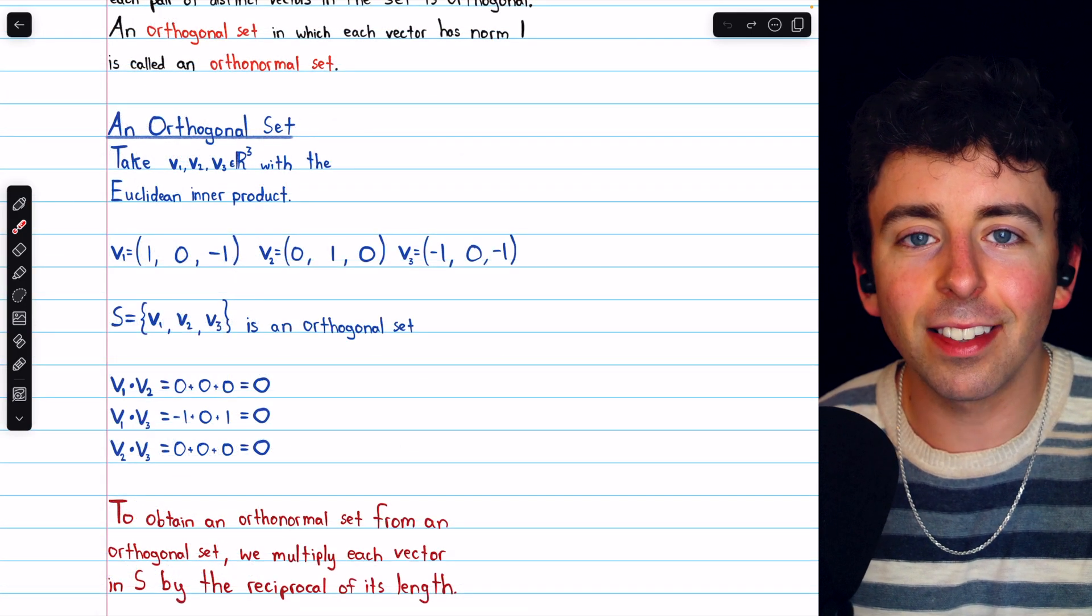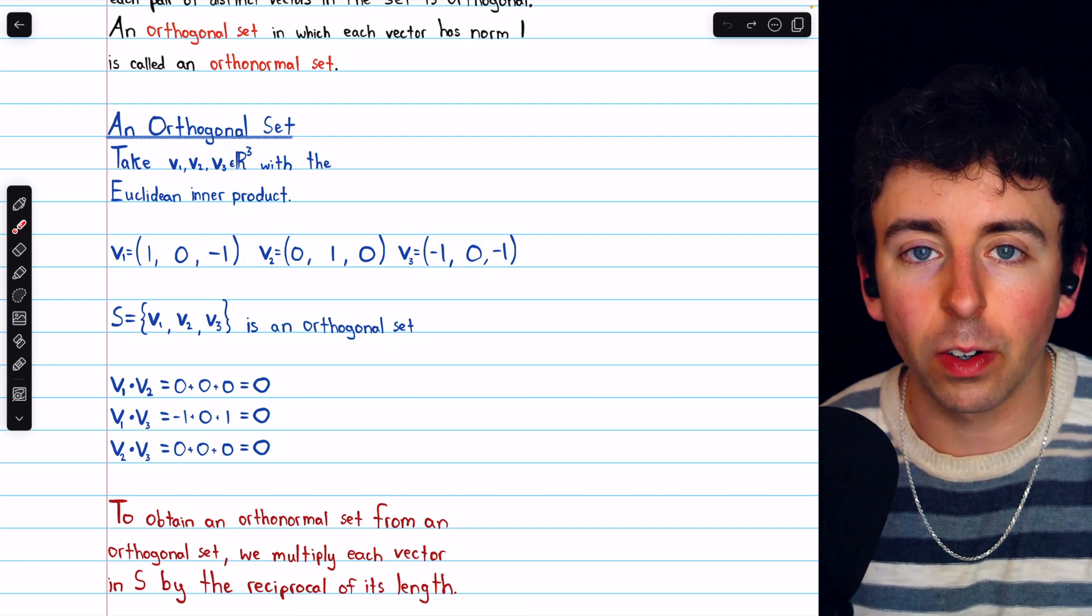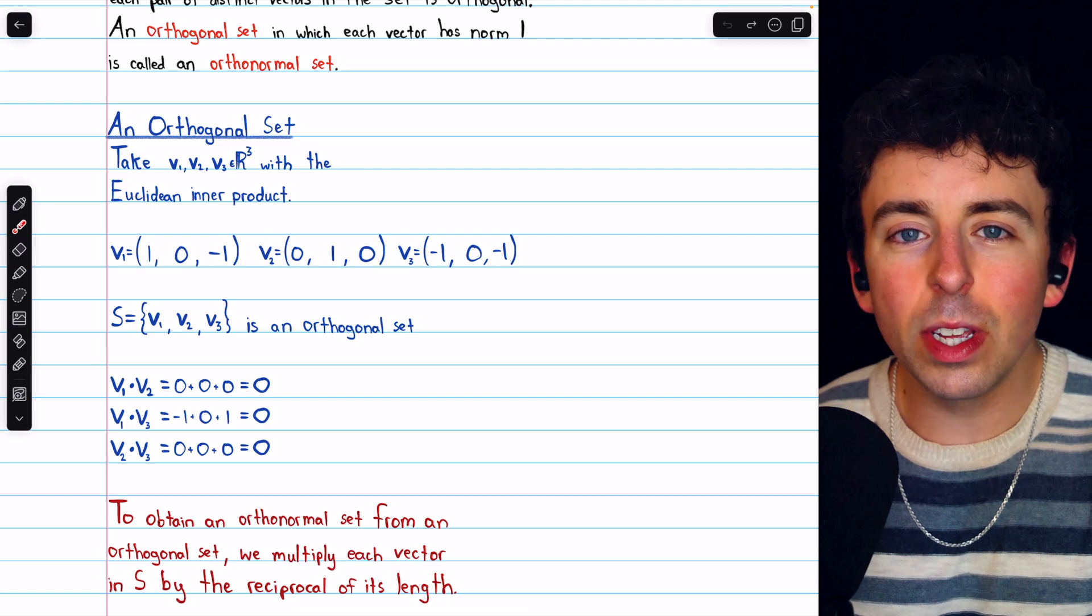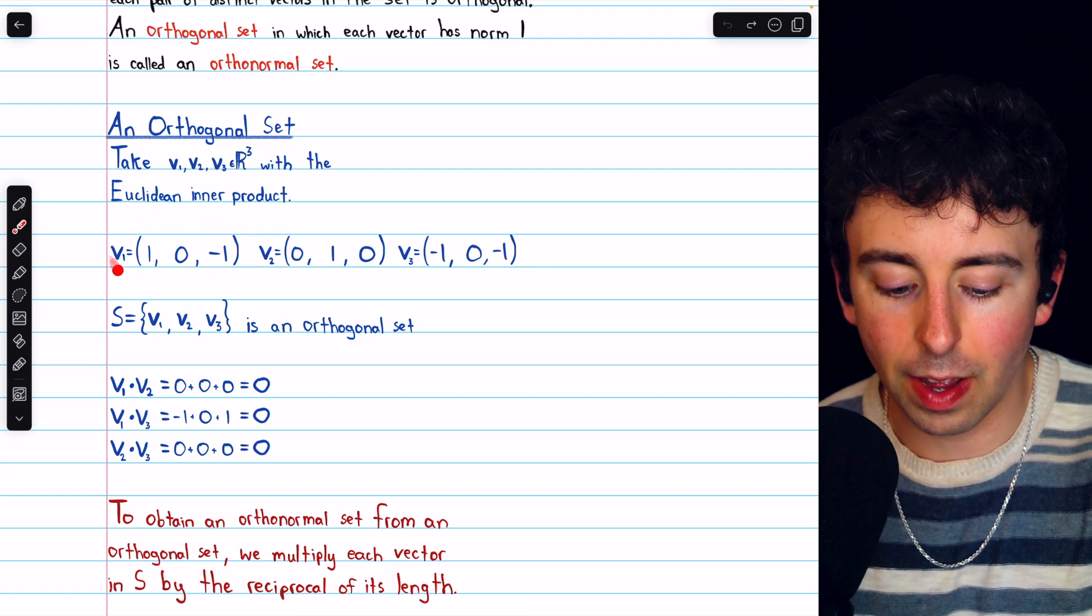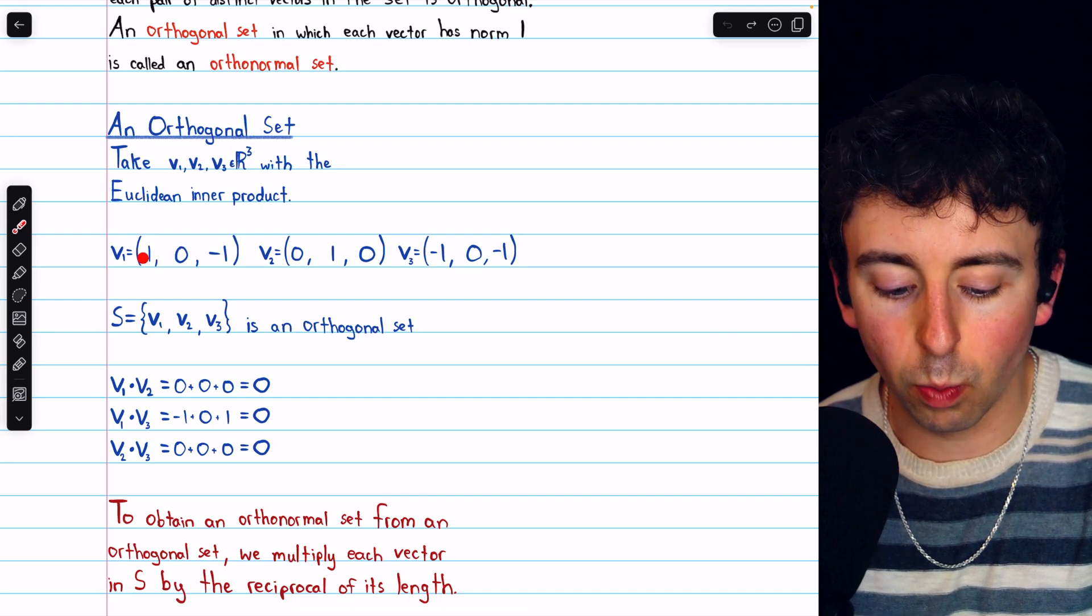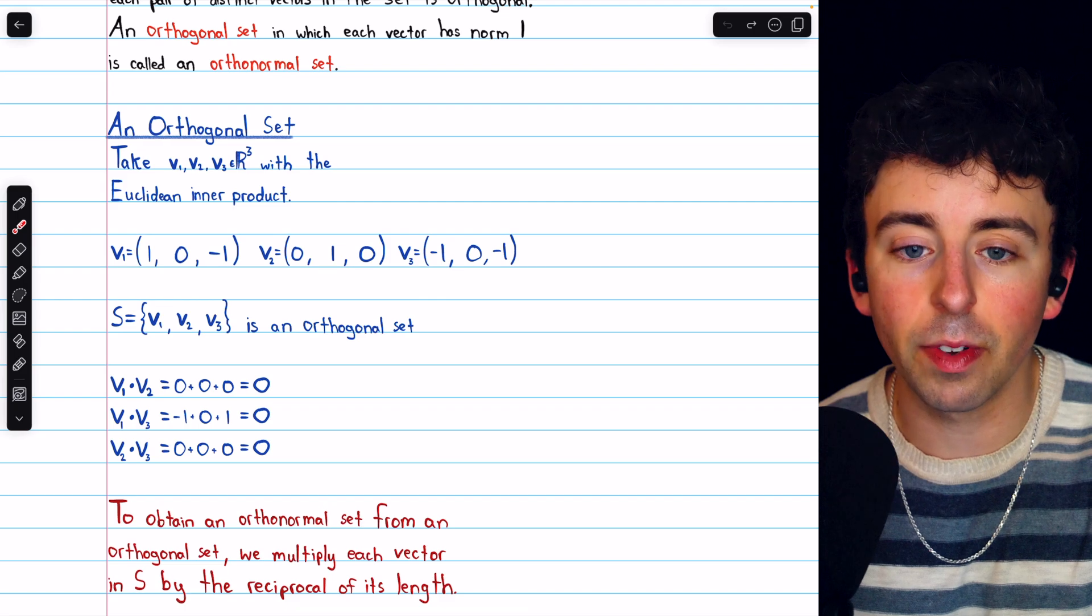Then we may ask, is S an orthonormal set? Are all of its vectors unit vectors with a norm of 1? We can quickly see that the answer is no. For example, the length of the vector V1 would be the square root of 1 plus 1, so root 2. So V1 is not a unit vector.